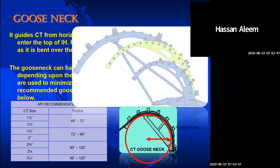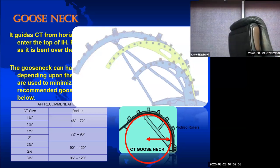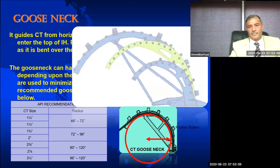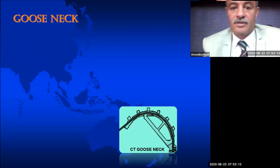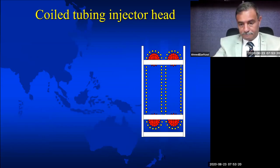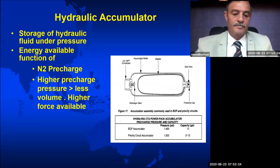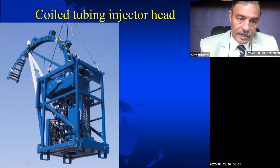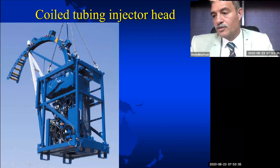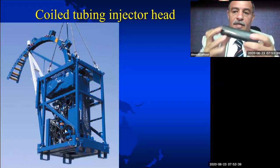Thank you, Engineer Ahmed. A student is asking if you can please repeat the roller mechanism as a factor controlling pipe life. Let me grab something here and go back to the gooseneck picture. Here is our injector, here is the gooseneck, and what you see in yellow here are the rollers. Consider that this is the pipe coming from the reel straight, and it has to go by the gooseneck before it goes inside the injector to become straight again so we can run it in the hole.